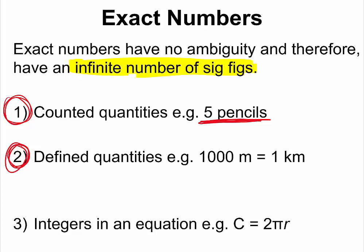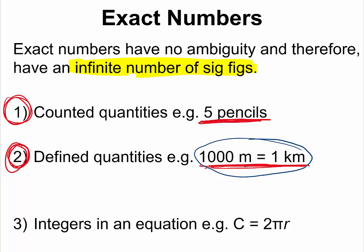Another type of exact number is defined quantities. For example, there are one thousand metres in one kilometer — that is defined. 999.99 metres is not the same thing as one kilometer. Which means this relationship has an infinite number of significant figures. So please, when you are looking at a defined quantity, do not say that 'one' is one significant figure — it is not, because it is not a measurement. It is a defined quantity. Only measurements have significant figures.